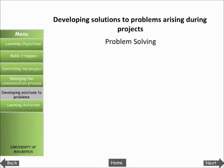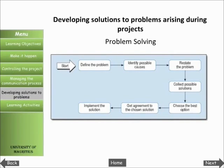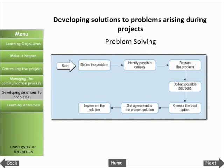Involving the whole team in the problem-solving process shows that you value their experience and knowledge in devising a solution. Problem solving can be broken down into a series of steps as shown in the figure. It starts by defining the problem. It is vital that the problem is identified correctly. If the risk management system is working properly, the problem should not have hit you completely out of the blue, and you should already have some idea what it is about.